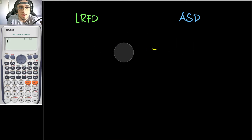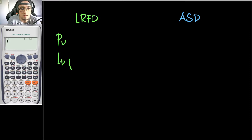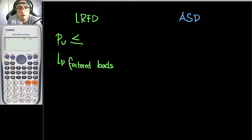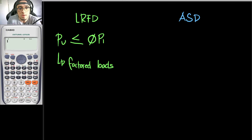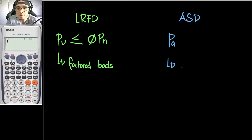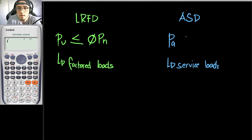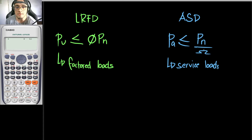For LRFD, your factored load Pu should be less than or equal to the design strength, which is phi times Pn, where Pn is the nominal strength and phi is the reduction factor. For ASD, your service load Pa — which is the unfactored load — should be less than or equal to the nominal strength divided by omega, where omega is the factor of safety.